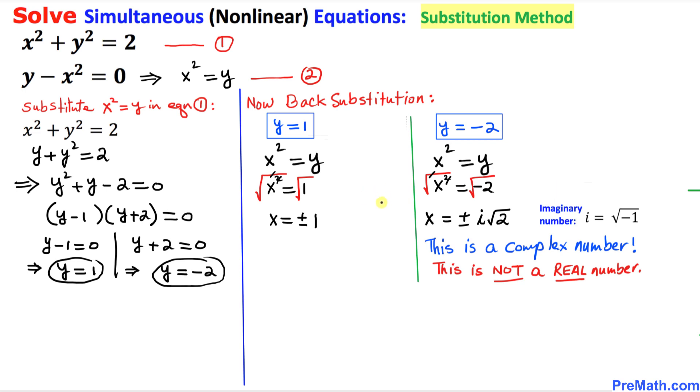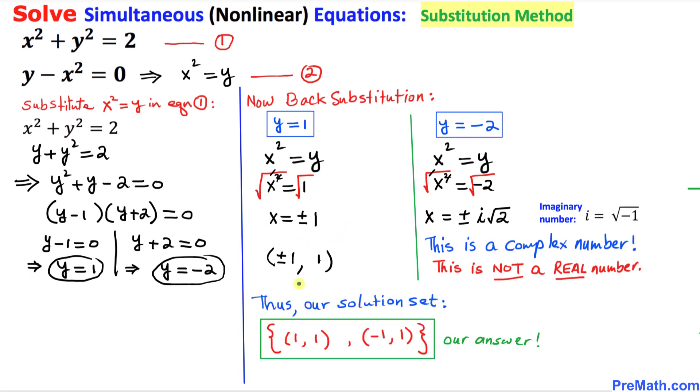So thus our only real solution is going to be this part. The first part that is going to be x is positive or negative 1 comma y value is 1. Once again this is x value and this is y value. So thus our solution set is going to be 1 comma 1 one ordered pair and the other one is going to be negative 1 comma 1 when we separate these x values. All right and that is our final answer.